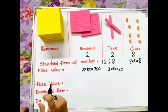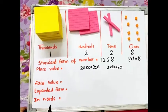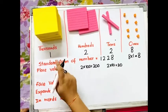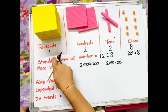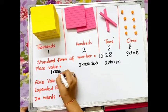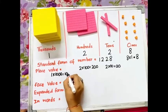Now, 1 is at thousands place. So, it means that there is 1 thousand. Therefore, the place value of 1 in this number is 1 into 1000, which is equal to 1000.